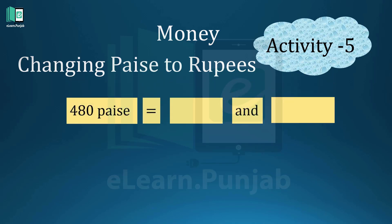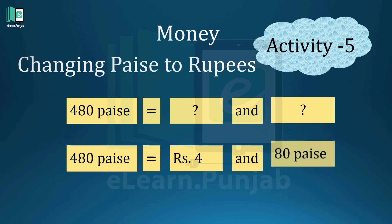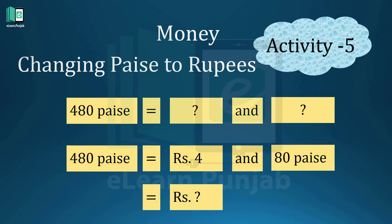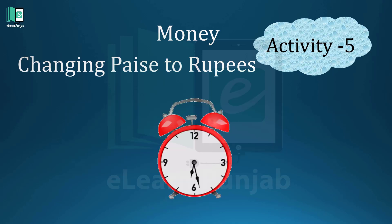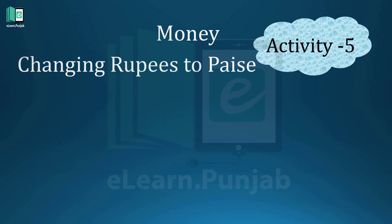Do you know 480 Paise is equal to how many rupees? 480 Paise is equal to Rupees 4 and 80 Paise. But what is the total amount? Calculate it. The right answer is Rupees 4.80. By this method you can change Paise into rupees.